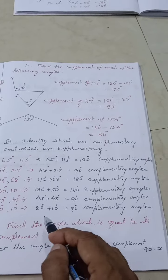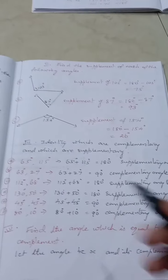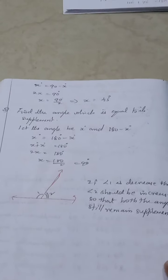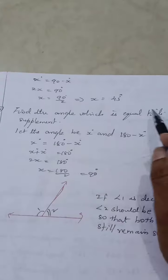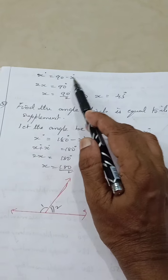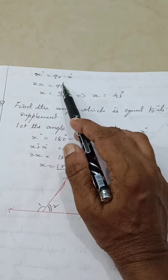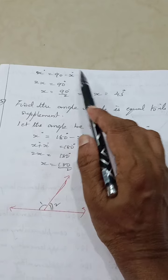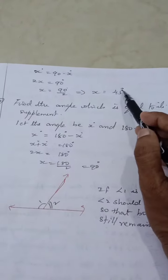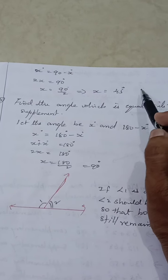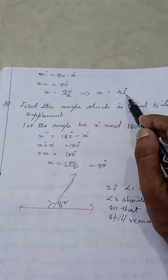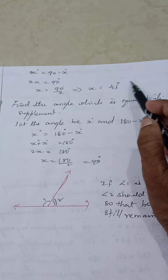Problem four: find the angle which is equal to its complement. The angle and its complement should be the same. Since complementary angles sum to 90, we divide 90 by 2 to get 45. The complement of 45 degrees is also 45 degrees, so the answer is 45 degrees.